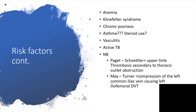Active tuberculosis is a risk factor as well. To clarify two specific conditions: Paget-Schroetter syndrome refers to upper limb thrombosis resulting from thoracic outlet obstruction. May-Turner syndrome is a condition where compression of the left common iliac vein causes left iliofemoral deep vein thrombosis. In both cases, DVT can form and lead to pulmonary embolism and sudden death.